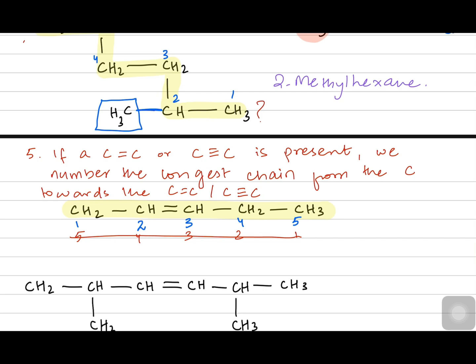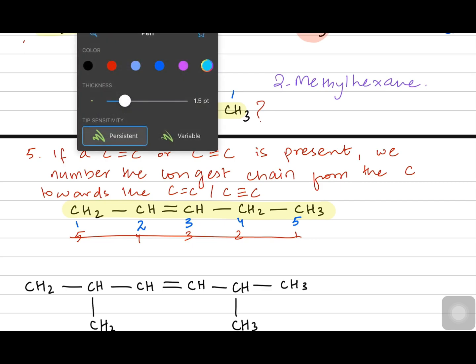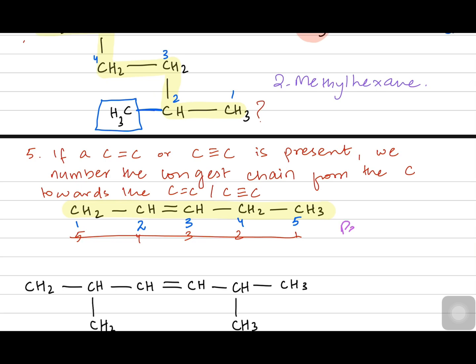Numbering from the left gives the carbon-carbon double bond a smaller number, while numbering from the right gives it a bigger number. So we number from the left. The final name is pent-2-ene — the number two means the carbon-carbon double bond starts at position two. You don't have to mention both two and three because it's obvious the double bond between carbons two and three starts at position two.